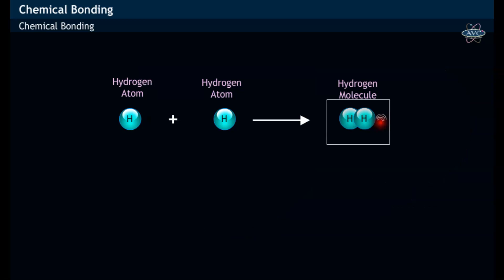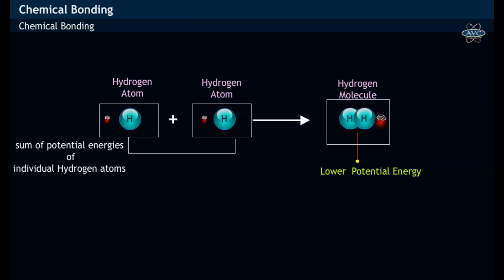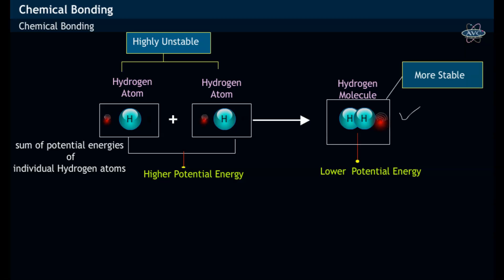The hydrogen molecule formed has lower potential energy compared to the potential energy of individual hydrogen atoms. Hence, the hydrogen molecule is more stable when compared to individual hydrogen atoms.